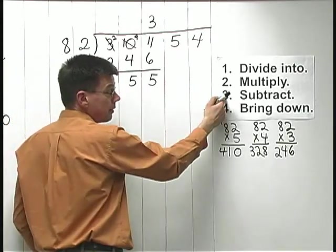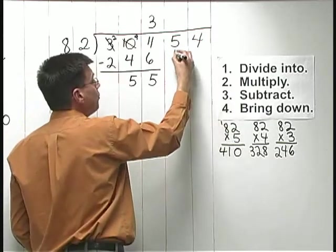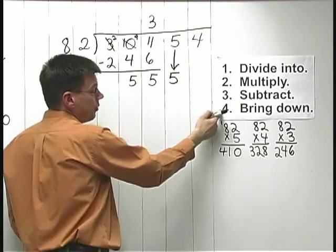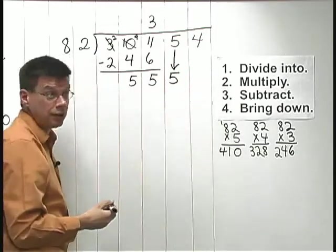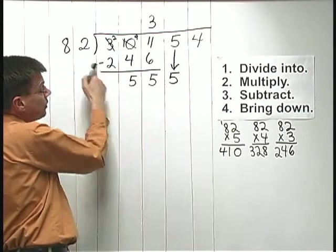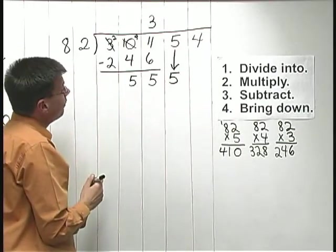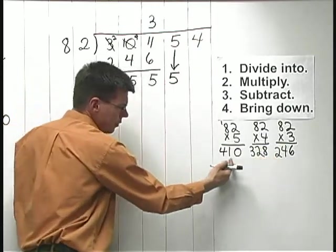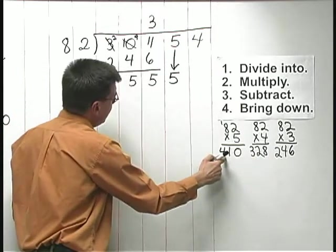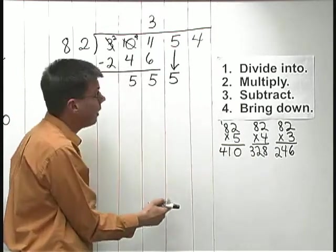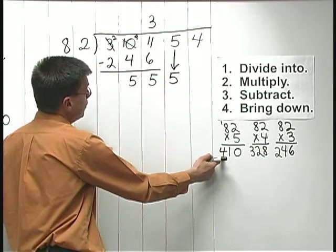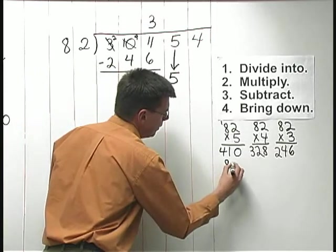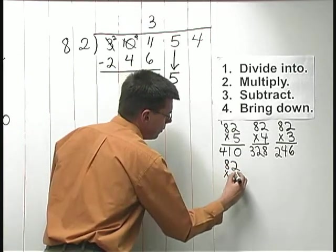After the subtract step comes the bring down step. I bring down the next place. I bring down a 5. After the bring down step, I go back up to divide into. How many times does 82 go into 555? Now, from what we've seen so far, what we've figured out so far, I know it's probably going to be more than 5 times, because 5 times 82 is just 410. What if I try 7 times here?